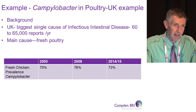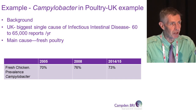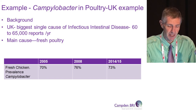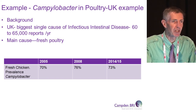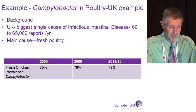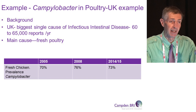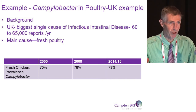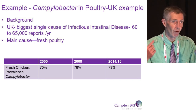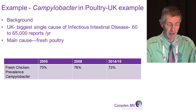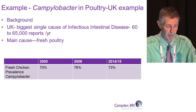As in most countries, the biggest single cause of food poisoning in the UK every year is campylobacter, causing various types of infectious intestinal disease. We have somewhere around 60 to 65,000 reported cases in the UK every year. The main cause is contamination of raw poultry - either undercooked or causing cross-contamination in the kitchen environment - leading to cases or outbreaks.